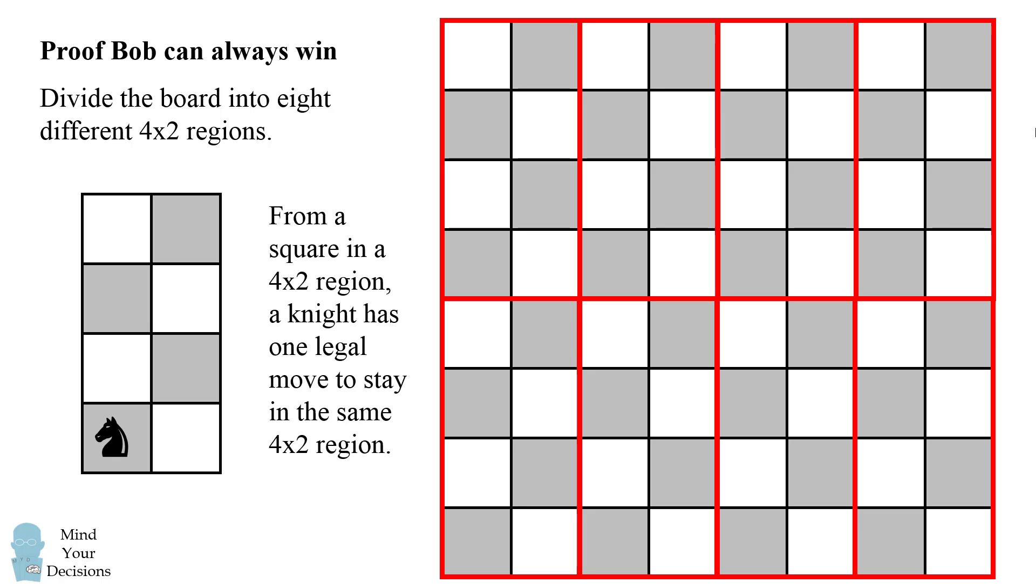From a square in a given 4x2 region a knight has only one legal move to stay in the same 4x2 region. So from this square there's only one possible spot the knight could go while staying in this 4x2 region. So what we'll do is we'll color code these two squares the same color. From either of these squares the knight can only move to the other position.